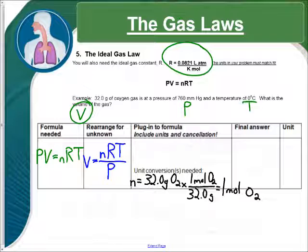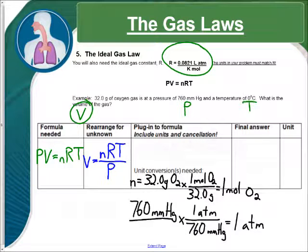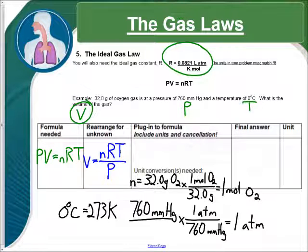Now, as we come to pressure, 760 millimeters of mercury, we're going to convert that to atmospheres. One atmosphere is the same as 760 millimeters of mercury, so that is one atmosphere for our pressure. And then our last one, we need temperature in Kelvin. Zero degrees Celsius, we get that by adding 273 to the zero, so it comes out to be 273 Kelvin.